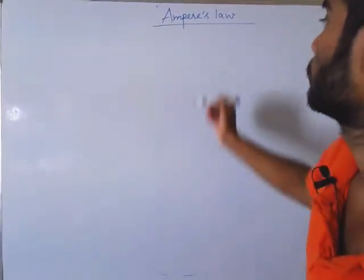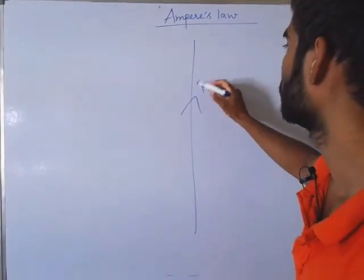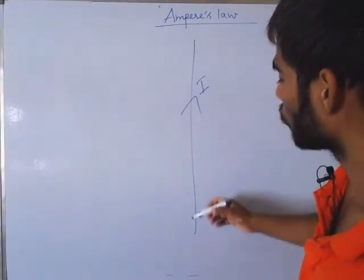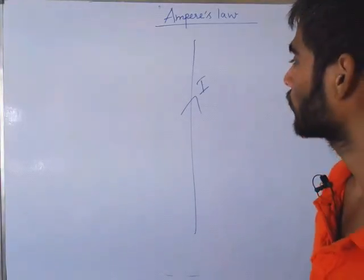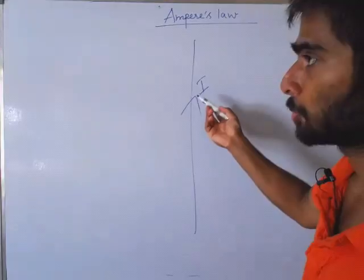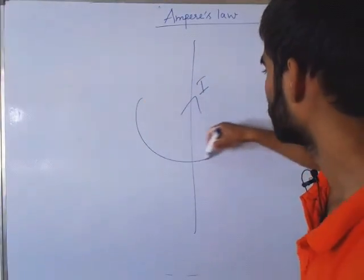Now let us see. This is a conductor having a current I. This conductor is extended upward infinitely and downward infinitely. It is obvious that if current is present there will be a magnetic field around the conductor, like this.